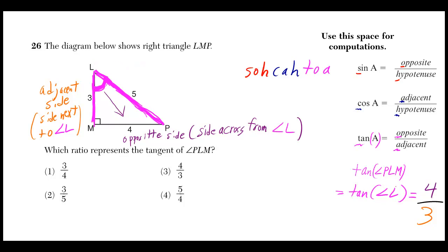So, if we have to do the tangent of angle L, we need the side that's opposite L. Well, it's the same thing as just saying the side across from angle L. And in this case, that is the 4 right there.